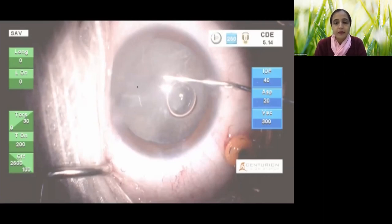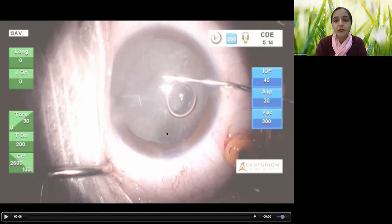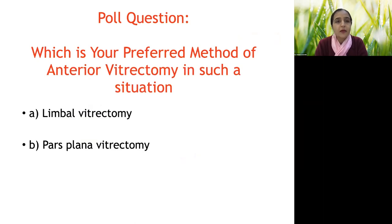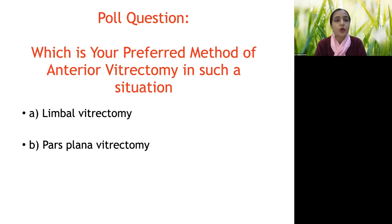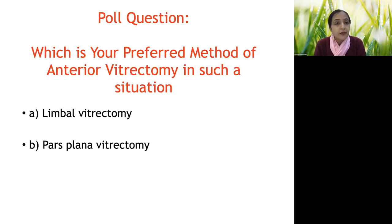Be very conscious not to use the main port as much as possible, even though it's a self-sealing 2.2 mm incision. Even without much vitreous presenting, with such a large rupture it is crucial to perform an anterior vitrectomy before any further maneuvers. It may be tempting to enlarge the incision and do an extracapsular or SICS nucleus delivery, but we should avoid that — it invites much more vitreous and enlarges the capsular rupture.